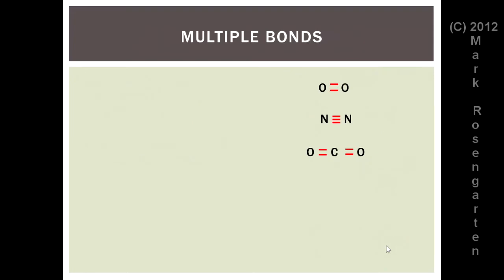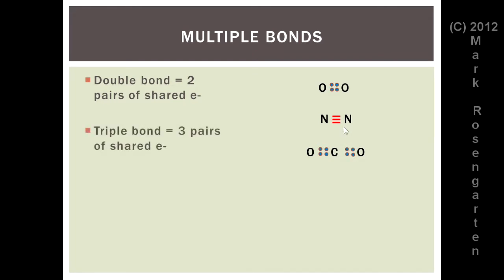If you're dealing with multiple bonds, simply replace each dash with two dots. So a double bond would be two pairs of shared electrons. Replace the two bonds in oxygen with two shared pairs of electrons. For each of the double bonds in carbon dioxide, replace each double bond with two pairs of shared electrons. In the case of a triple bond, as in diatomic nitrogen, replace each dash with two dots — three dashes means three pairs of shared electrons.